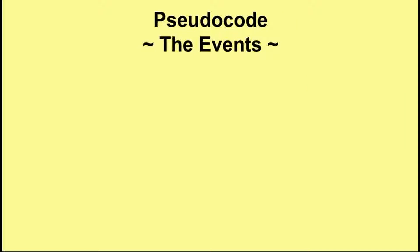We've had a look at how to create a requirements list, how to use that requirements list to create the screens, how to use the screens to get a list of events, and in the previous video we looked at creating the outline of the code for those events. Now we're going to look at coding those events.